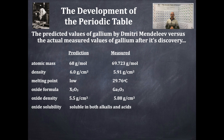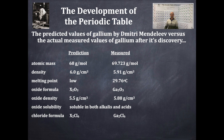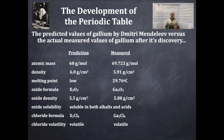The oxide density was predicted at 5.5 g/cm³ and measured at 5.88 g/cm³ — spot on. The oxide is soluble in both alkalis and acids. The chloride formula was predicted as X₂Cl₆, and gallium's formula was indeed Ga₂Cl₆. The chloride was also predicted to be very volatile — transitioning from solid to gaseous state readily. All these predicted and measured values coincided.